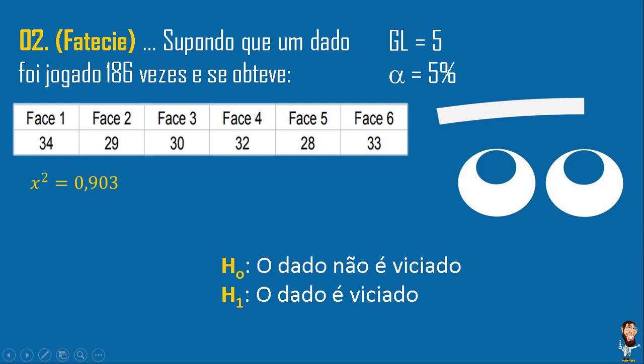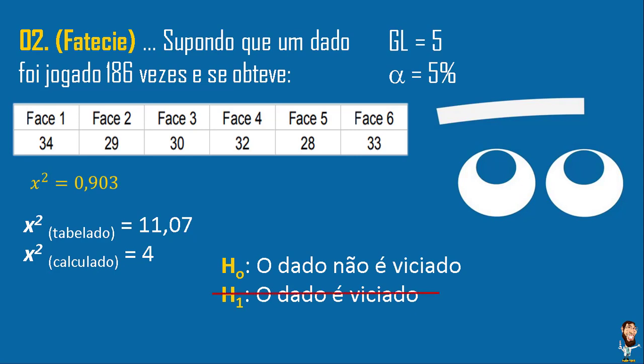O Q² calculado é 0,903. Vamos às hipóteses: o dado não é viciado — hipótese H0; o dado é viciado — hipótese H1. O Q² tabelado, com grau de liberdade 5, é 11,07. O Q² encontrado é 0,903 — um valor menor do que o tabelado. Logo, nós não rejeitamos H0. Portanto, concluímos que o dado não é viciado e o resultado é confiável.